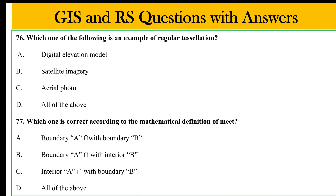This is an example of regular tessellation, a digital elevation model in satellite imagery. This is random and irregular tessellation or constellation. This is an example of a map which is correct according to the mathematical definition. This is a standard of intersection.